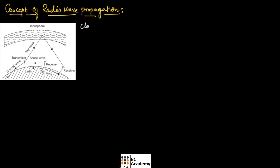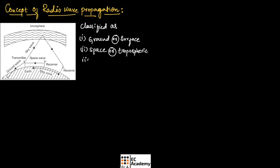Radio wave propagation can be broadly classified as ground or surface wave, space wave or tropospheric, and sky wave. As you can see in this diagram, we have ground wave, sky wave, and space wave — showing the different modes of propagation used in a communication system.